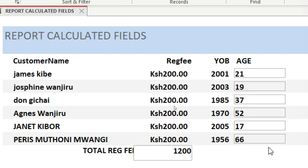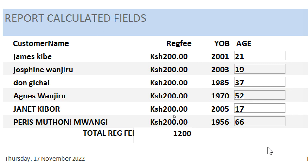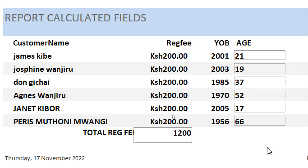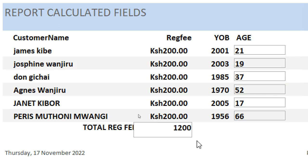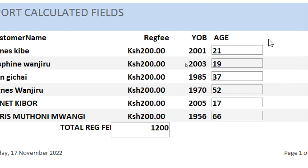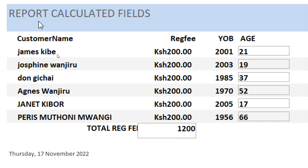I save, go Home, and click View. The calculations are now real and realistic — the total registration fee is 1200 and the ages have been calculated using the text boxes. That's how you create calculated fields in a report. Remember to subscribe, share, comment, and revisit the channel to see what's new. Thank you very much.